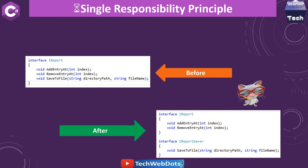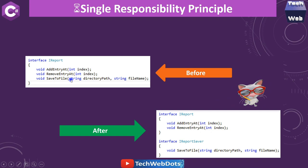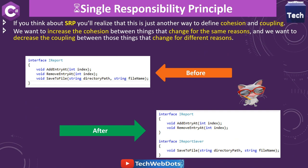This is the same example I explained in my previous video, where I discussed how we can achieve Single Responsibility with interfaces — IReport divided into two parts. If you want to add a SaveToFile method in the same interface, that is again a violation. In that case, we can create another interface called IReportSaver.